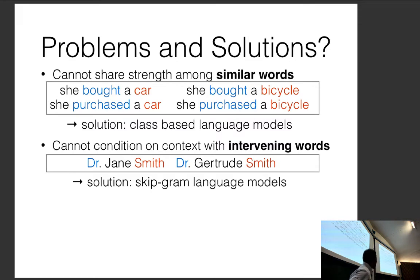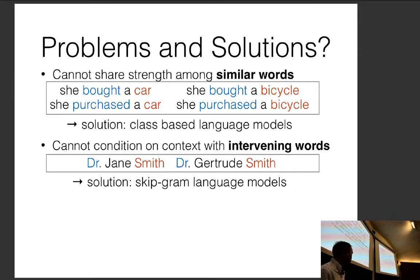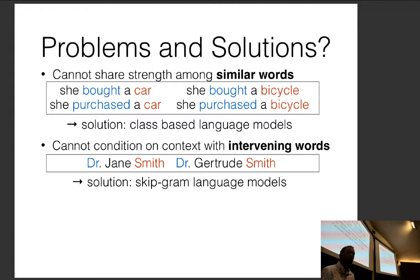Another problem: n-gram models cannot condition on context with intervening words. If you've seen 'Dr. James Smith' in training but never 'Dr. Gertrude Smith,' the model can't use the knowledge that 'Dr. Something Smith' is common. There was a pre-neural solution called Skipgram language models — different from the Skipgram in Word2Vec — which skipped certain words in context. Also, n-gram models can't handle long-distance dependencies beyond the n they're limited to.